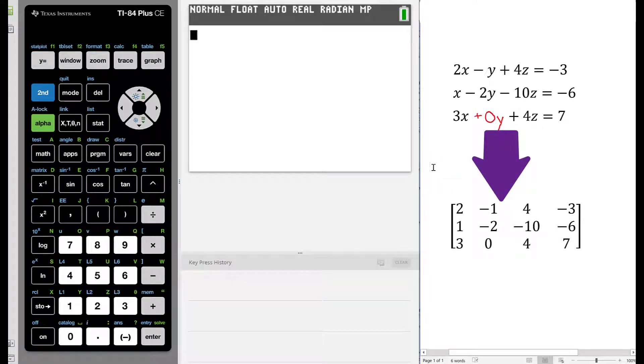As an augmented matrix, we will have this following matrix, which has appeared on the screen. I will now read the entries by row from left to right. Row 1 is 2, negative 1, 4, and negative 3. In row 2, we have 1, negative 2, negative 10, and negative 6. In row 3, we have 3, 0, 4, and 7.